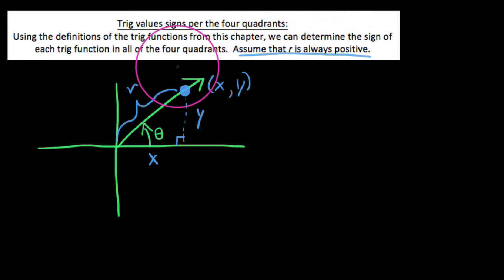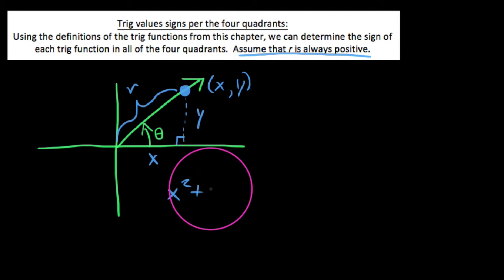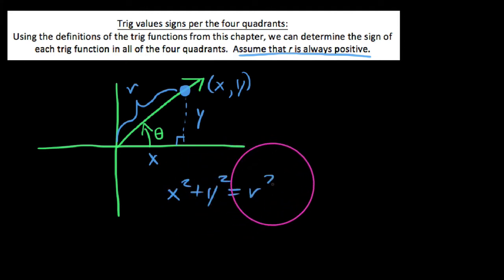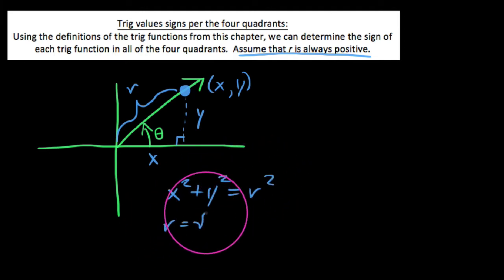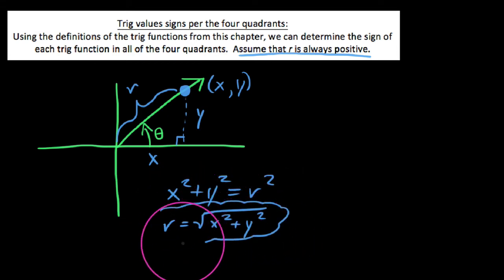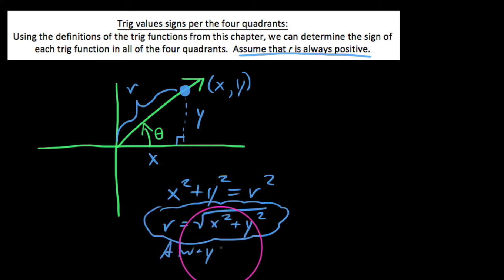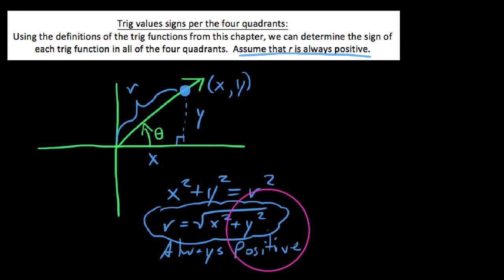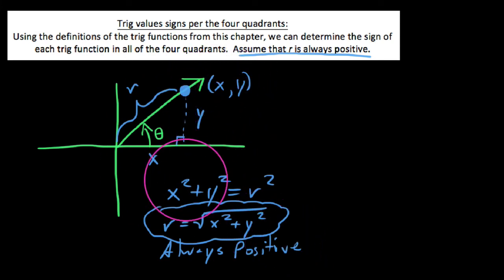We always assume that r is positive, and of course we know this is true because if x² + y² = r², then r equals the square root of x² + y², and r is a distance, so r is always positive. But here's the thing: x and y need not always be positive. Going into the definition of the trig functions, let's keep that in mind.